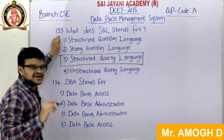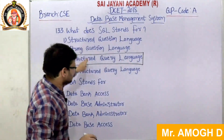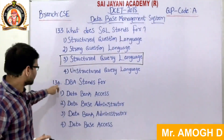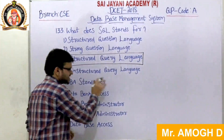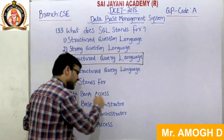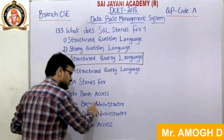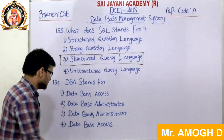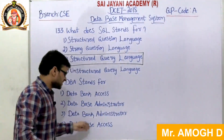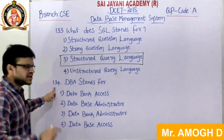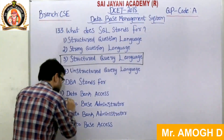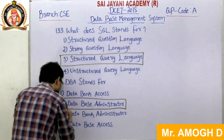For question number 133, the third option, structured query language, is the right answer. Moving on to question number 134: DBA stands for — with four options: data bank access, database administrator, database access, and a fourth option. The correct answer is the second option: database administrator.